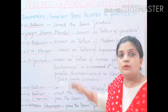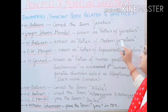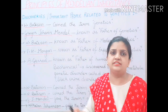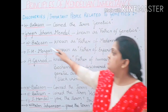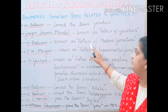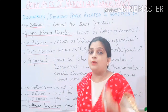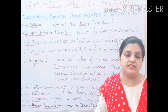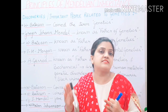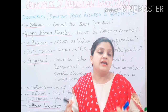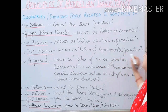W. Bateson is known as the father of modern genetics — whatever modern genetics is in front of us today, the modernity, tools, and all were given by W. Bateson. T.H. Morgan is another most important name in genetics; linkage, recombination, and various new experiments and terms were proved by him, and he is known as the father of experimental genetics.